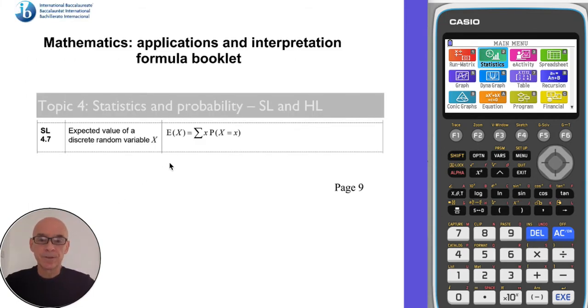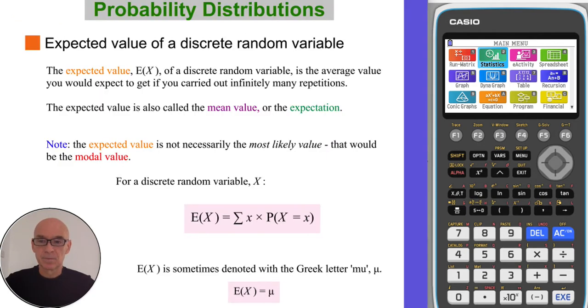The formula for the expected value is given on page nine of your formula booklet. Just to remind you, the expected value is the sum of the products of each value multiplied by its respective probability.